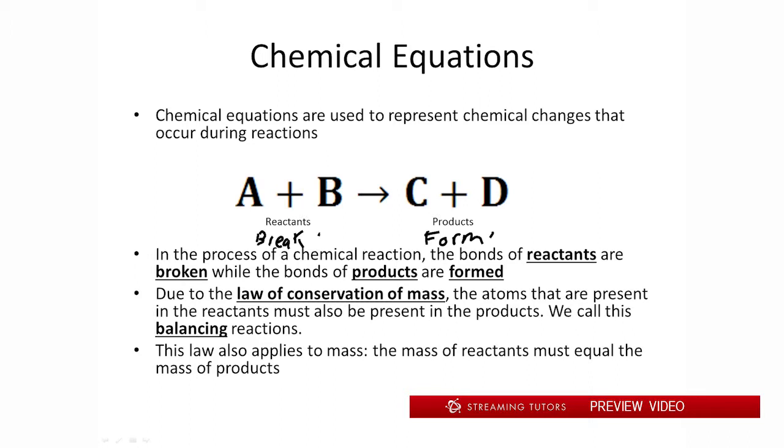So we first break reactant bonds and then we form product bonds. Now due to the law of conservation of mass, the atoms on each side of a chemical reaction have to be the same. So for example if I had two carbons and two hydrogens here on the reactant side, I would have to have two carbons and two hydrogens on the right side as well. And we're going to use that fact to balance our equations, look at our stoichiometry, and do our calculations with stoichiometry.